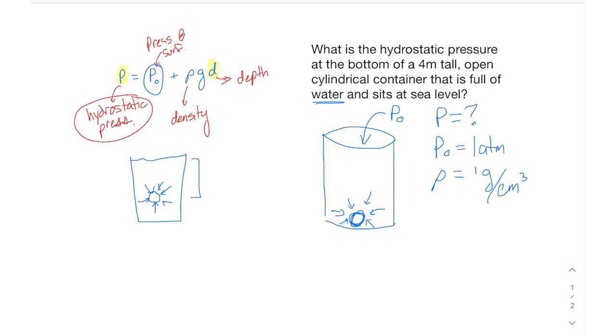And then a depth that says it's a 4 meter tall container. So it's going to be 4 meters, and g we always know is 9.8 meters per second squared.